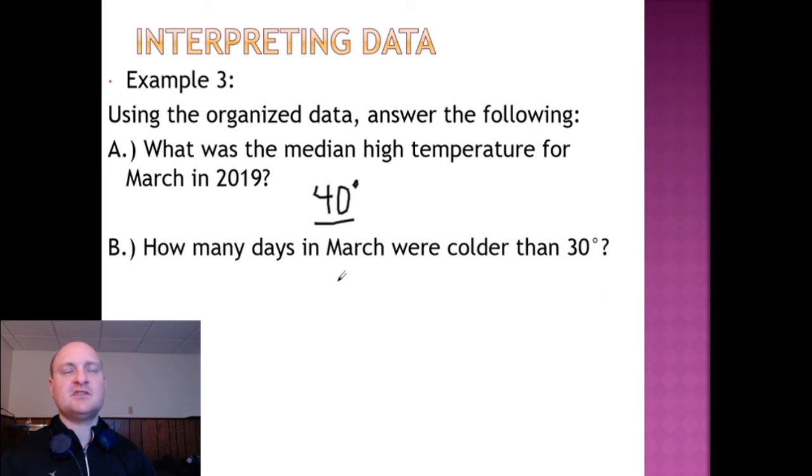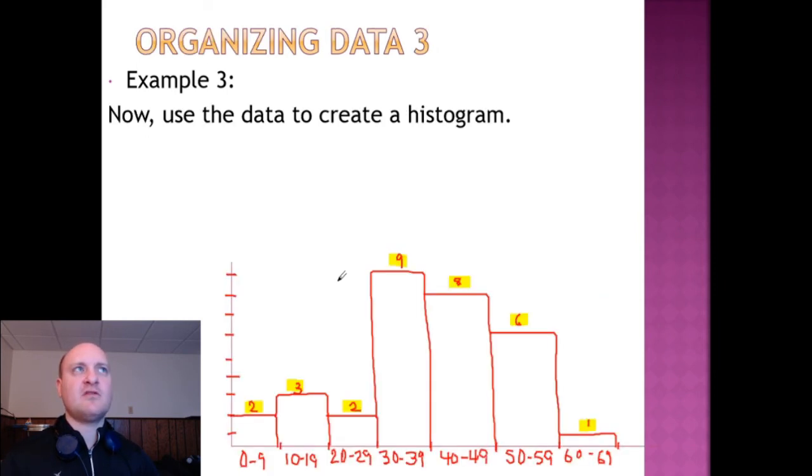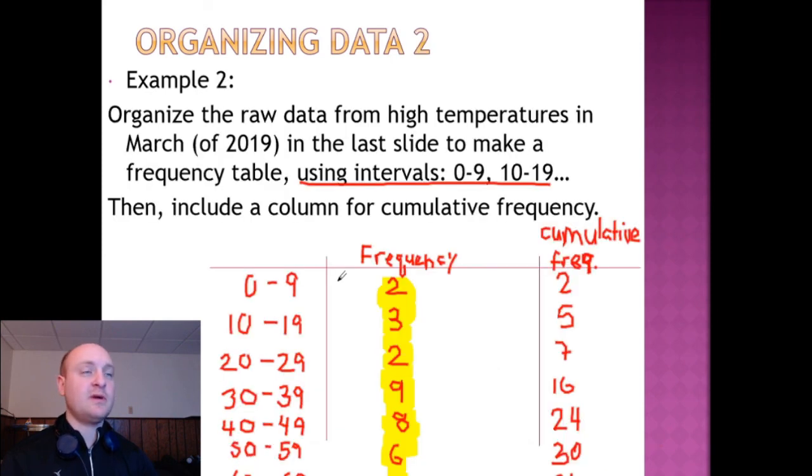Our second question asks us to determine how many days in March are colder than 30 degrees. And for this one, we can check back to either the histogram or, more quickly, the frequency table, since temperatures lower than 30 degrees are 29 or lower, and our cumulative frequency up until 30 is 7.